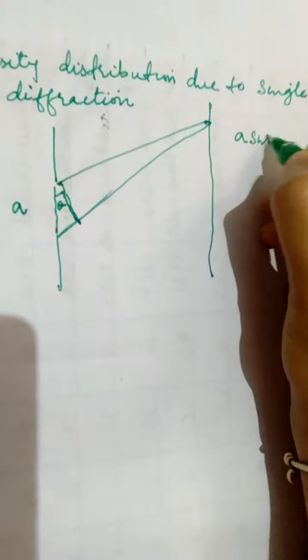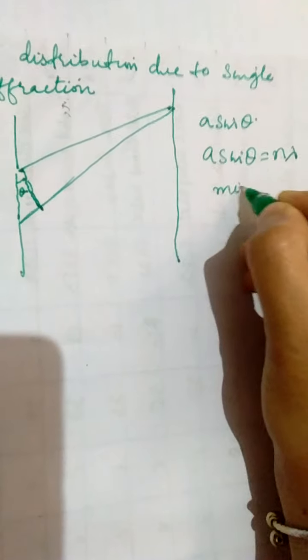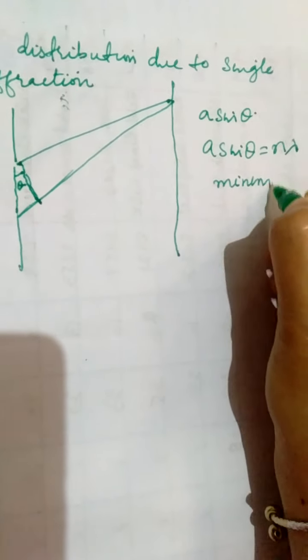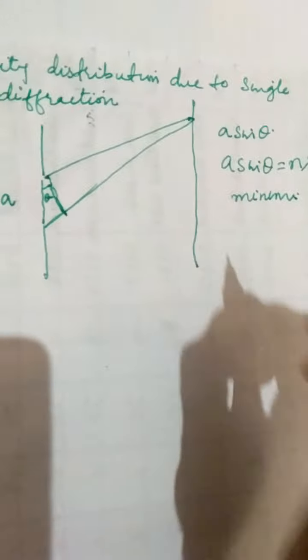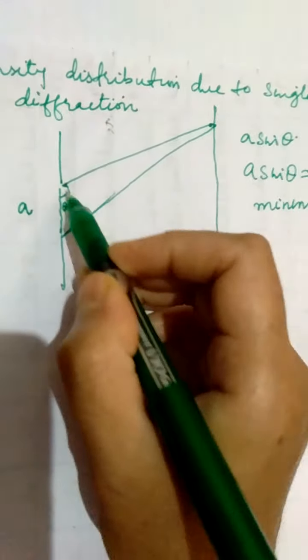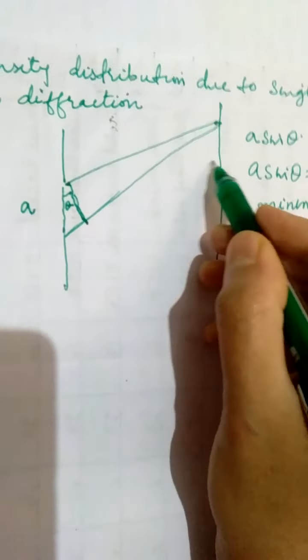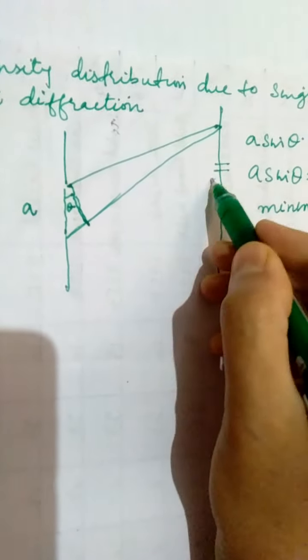We found that a sinθ from this triangle was the path difference, and we also said that a sinθ should be equal to nλ for minima.